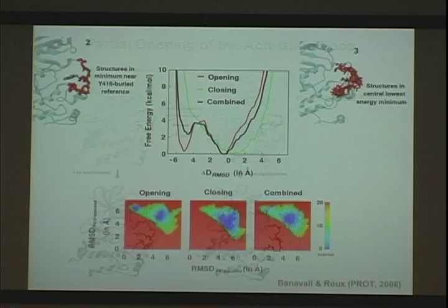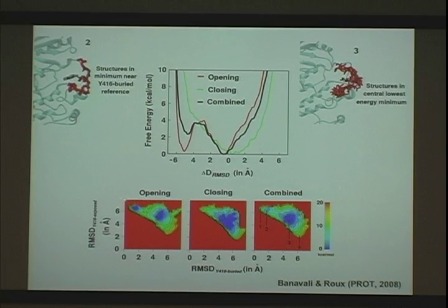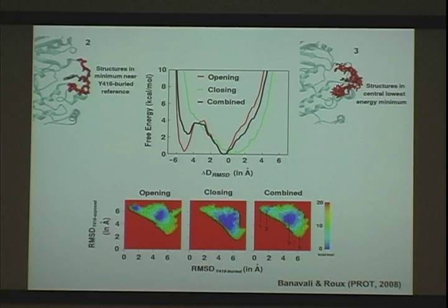We used these as reference states to do umbrella sampling. We did many runs, and this is a very difficult problem to sample. The potential of mean force when you compute it is not always the same depending on how you combine your results. If we try to open from the closed state, we find the blue stable state is the inactive state, plus another partially open state. If we start from the open state and try to bring it down to closed, we don't find that other state. If you combine everything, you find two stable minima. I don't really know what is the relative free energy of those two states, but I think they both exist.